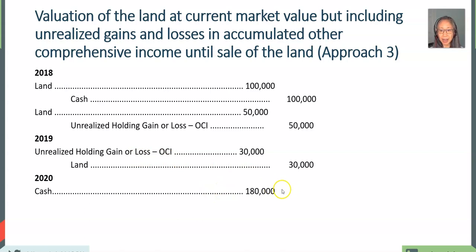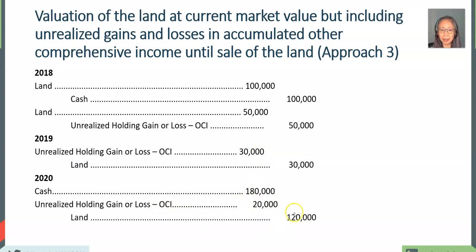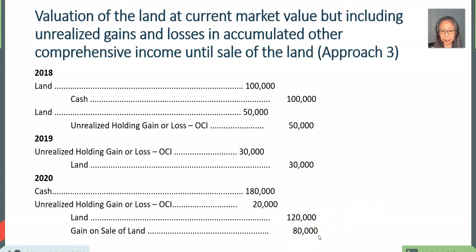When we sell the piece of land, we receive $180,000 in cash. We also have an unrealized gain of $50,000 in other comprehensive income, reduced by $30,000 when the value went down. The land's value as recorded is $120,000, and the gain is $80,000. This is the third approach to recognize revenue.